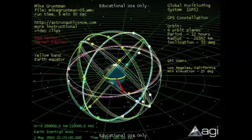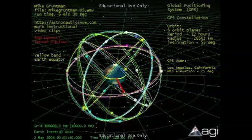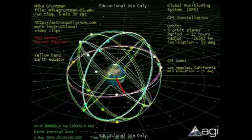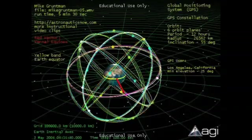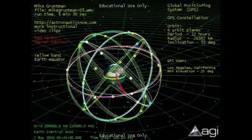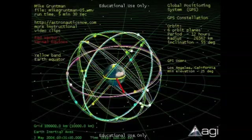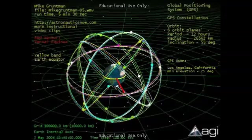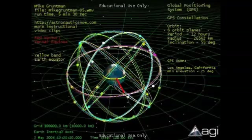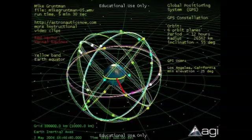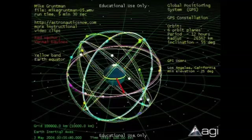The Global Positioning System provides three-dimensional position and time information worldwide 24 hours per day for users equipped with GPS receivers. GPS satellites transmit navigational signals. The concept is based on measuring time intervals for signals to reach the observer. The user must receive simultaneous signals from at least four GPS satellites.